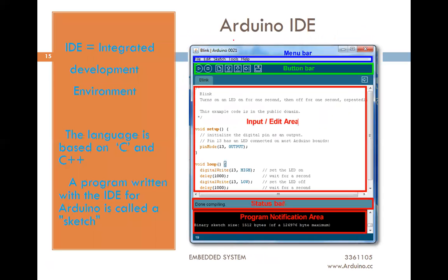The Arduino IDE software — IDE means Integrated Development Environment. The language used for programming is basically C and C++. When we write down a program in Arduino it is called a sketch. In the button bar you can compile your code and upload your code. There is a menu bar with File, Edit, Sketch, and Tools menus. You write your code in the editor area. The status area shows whether your code is compiled or not. If any error is generated it is shown in the notification area.